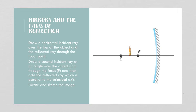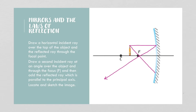We're going to practice drawing some images. The first thing to do is draw a horizontal incident ray over the top of the object, then draw the reflected ray through the focal point. There's our incident ray going to the mirror, and then we reflect through the focal point. Then draw a second incident ray at an angle over the object and through the focal point until it hits the mirror, then reflect it horizontally back.